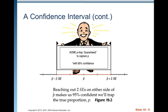Here we have a cartoon called 'Acne p-trap, guaranteed to capture p with 95% confidence.' It shows the interval centered around p-hat, going two standard errors in either direction, so we can be 95% confident that the true population proportion is somewhere in that interval. Reaching out two standard errors on either side of p-hat makes us 95% confident we'll trap the true proportion p.